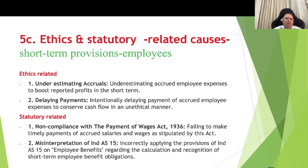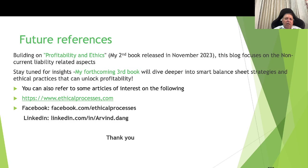Ethics-related causes for employee provisions: Number one — underestimating accruals, underestimating employee expenses to boost reported profits in the short run. Number two — delayed payments, intentionally delaying payment of accrued employee expenses to conserve cash flow in an unethical manner. Statutory non-compliance: Number one — non-compliance with the Payment of Wages Act 1936. Number two — misinterpretation of Indian Accounting Standard 15, incorrectly applying IAS 15 on employee benefits regarding calculation and recognition of short-term employee benefits and obligations.